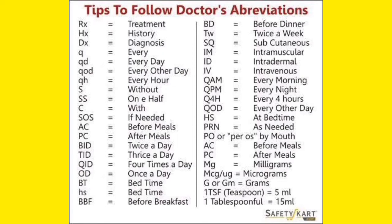Always remember: AC means before meals and PC means after meals. MG means milligram, MCG means microgram, and G means gram. TSF means teaspoon, which is generally five ml — so two TSF means two teaspoons, which is 10 ml. One tablespoon actually means 15 ml.